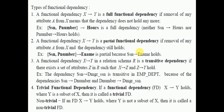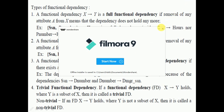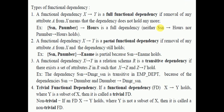The third type is transitive dependency: if X → Y and Y → Z, then X → Z also holds. For example, SSN gives department number, and department number gives department manager SSN, so SSN will also give department manager SSN. The fourth type is trivial functional dependency: X → Y where Y is a subset of X. If Y is not a subset of X, it is called a non-trivial functional dependency.